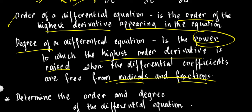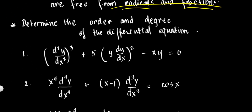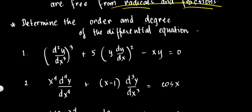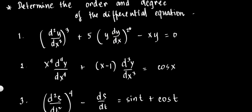When we say polynomial form, there should be no negative exponents and no fractions. So if there are radicals or fractions involving the differential coefficients, you must eliminate them first. We will illustrate this with examples. Our task is to determine the order and degree of each differential equation.